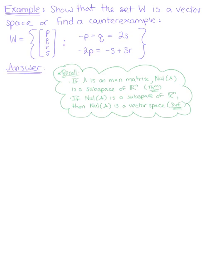Show that the set W is a vector space or find a counterexample. Here we are given a set W defined by the vector PQRS where we have -P + Q = 2S and -2P = -S + 3R.